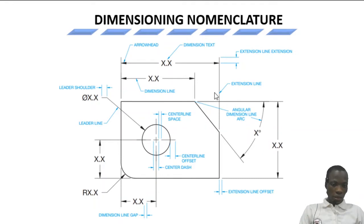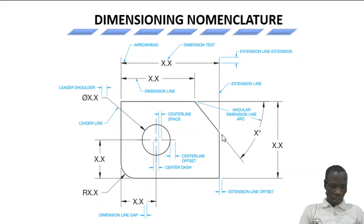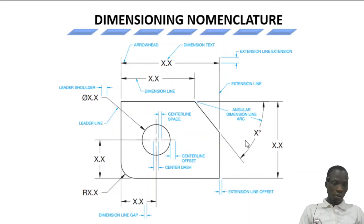If we want to dimension angles — angular dimension — this is what we use. For instance, if we have a chamfer or slanted edge, to dimension this edge in terms of the angle, we have an extension line from here and another from here, collinear with the slanted edge, with the extension line offset gap present. Then we have an arc with arrows at both ends and the angle value inside — that is the angular dimension line arc.